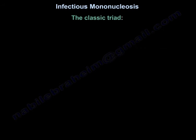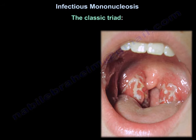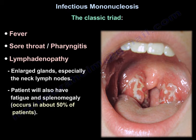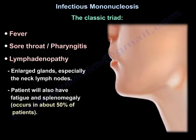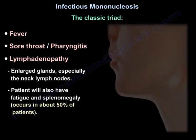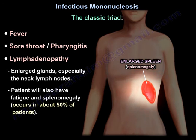The classic triad is fever, sore throat or pharyngitis, and lymphadenopathy — enlarged glands, especially the neck lymph nodes. The patient may also have fatigue and splenomegaly in about 50% of cases.